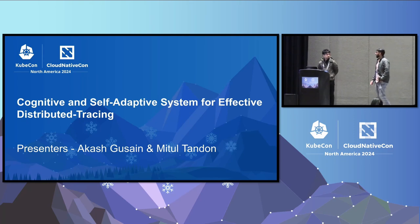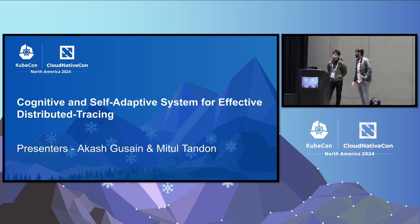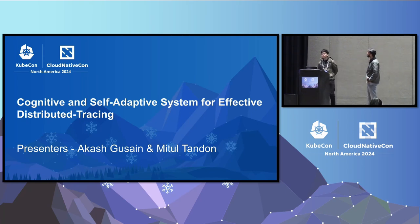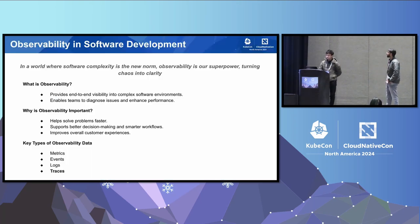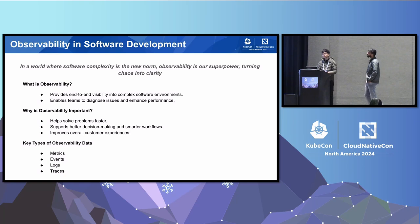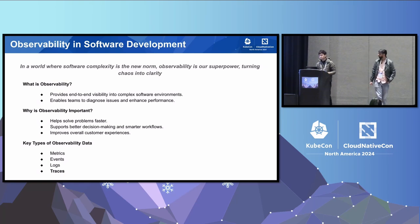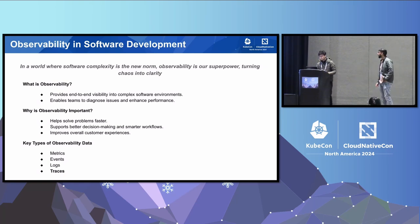The title for the talk today is Cognitive and Self-Adaptive System for Effective Distributed Tracing. Since the topic is based upon distributed tracing, which is part of observability, we figured we will talk about observability as well.